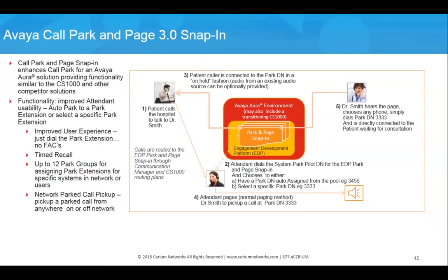The Avaya Park and Page snap-in is an example of introducing a new feature for Communication Manager. The existing park and page feature within Communication Manager is not as user-friendly as the similar feature in the CS-1000, requiring users to park calls against extensions and press a park button or dial a feature access code. Rather than writing new code in Communication Manager, Avaya developed this snap-in to solve the issue — the benefit being that the feature is not CM release dependent and became available more quickly than through the normal Communication Manager R&D cycle.